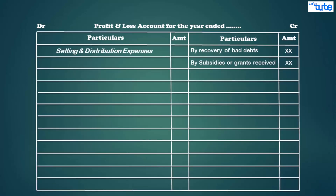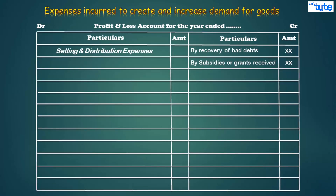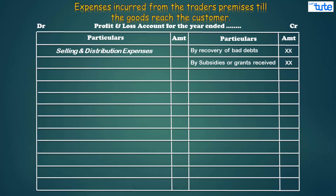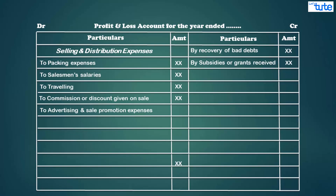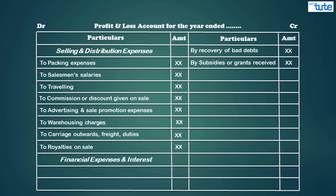Next we have selling and distribution expenses. Selling expenses are incurred to create and increase the demand for goods; distribution expenses are incurred from the time goods leave the trader's premises until they reach the customer. Examples include packing materials, salaries of sales and distribution staff, traveling and conveyance, commission or discount on sales, advertisement or showroom expenses, warehouse expenses, freight outward, carriage outwards, expenses on exports, and royalties on sales.